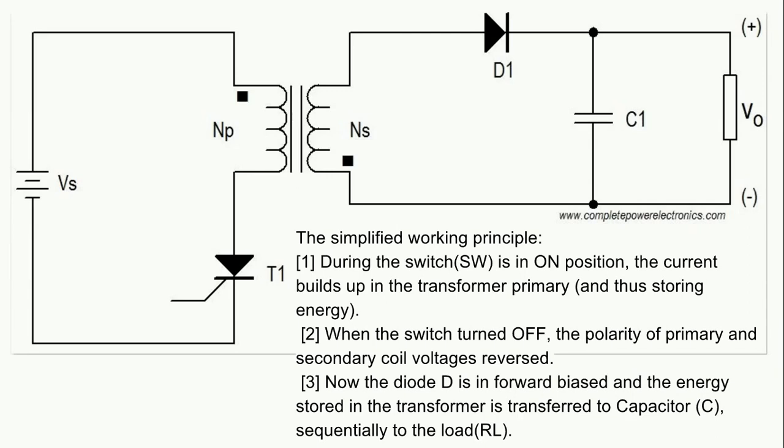So the secondary side winding upper point will become positive, so the diode will become forward biased and it starts to conduct and the capacitor gets charged as well as the load. This will happen when the switch is in off condition. So this is the basic operation in a simple way.